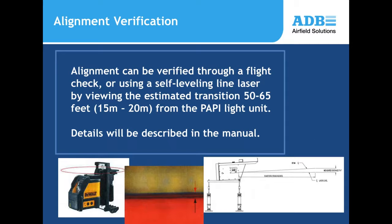The final step in the FAA market is a flight check to verify the alignment angles. For other markets, procedures in the manual describe using a self-leveling line laser system to estimate PAPI alignment at approximately 15 to 20 meters, or 50 to 60 feet, from the unit.